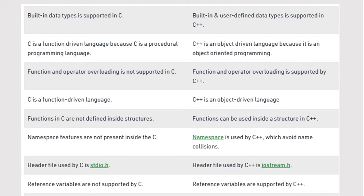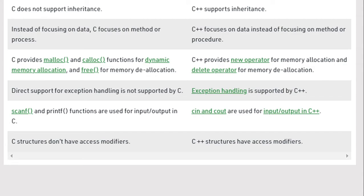Namespace features, which avoid name collision, are not present in C. The header file used by C is stdio.h, while the header file used by C++ is stream.h. Reference variables are not supported by C but are supported by C++. C does not support inheritance; C++ supports inheritance. C focuses on methods or processes, while C++ focuses on data.